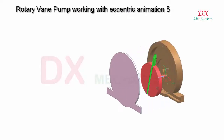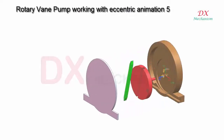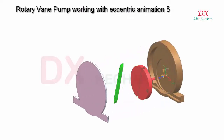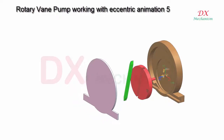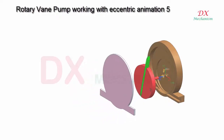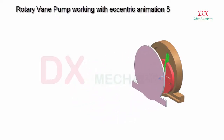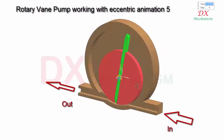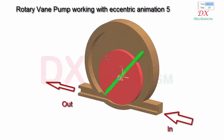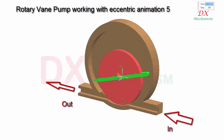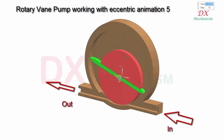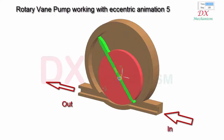In this video I will explain rotary vane pump working with eccentric animation. The red rotor rotates eccentrically in the housing. The green part can slide at the vane of the red rotor.